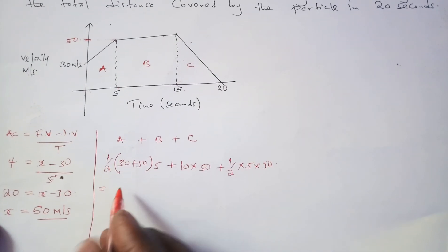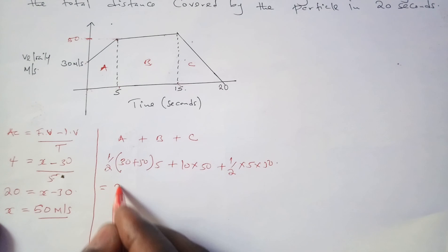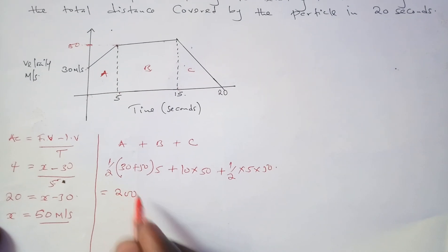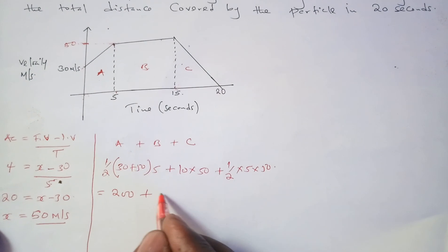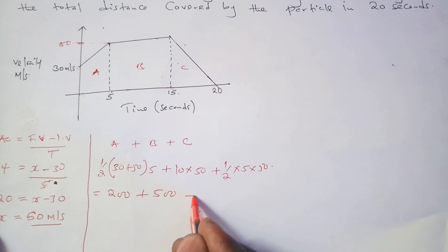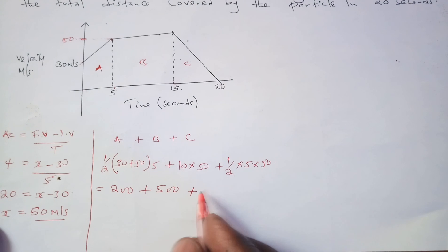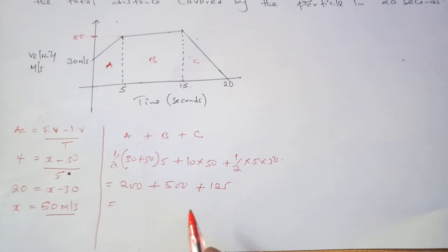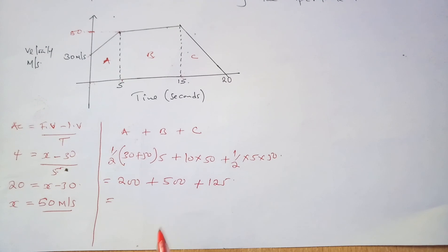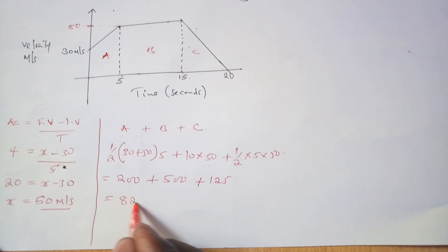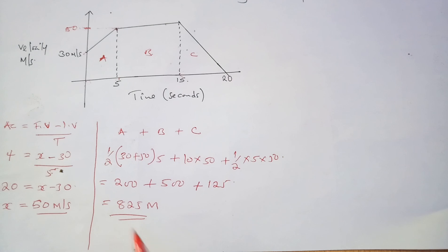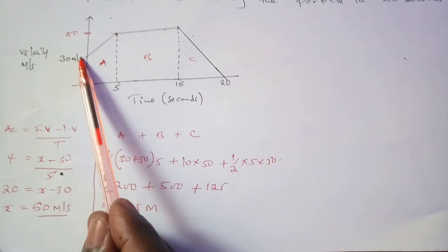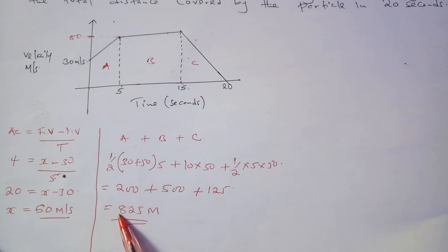Adding the values: Area A gives 200, Area B gives 500, and Area C gives 125. Adding all together gives a total distance of 825 meters. That is the total distance covered by the particle from start to end.